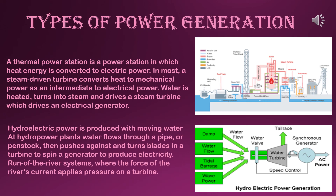In hydroelectric power generation, hydraulic — that is water — energy is converted to electric energy. Water acquires kinetic energy by falling from a higher to a lower level, then uses the energy to work a water turbine which in turn drives a generator. There is a hydroelectric power plant at Maithan in West Bengal. Water flows through a pipe or penstock, then pushes against and turns blades in a turbine to spin a generator and produce electricity.